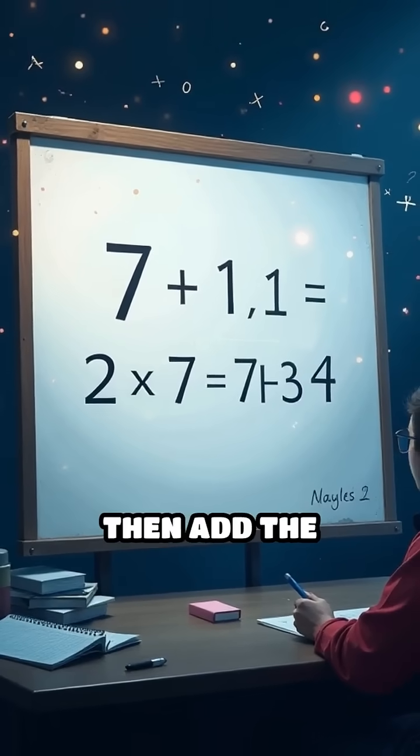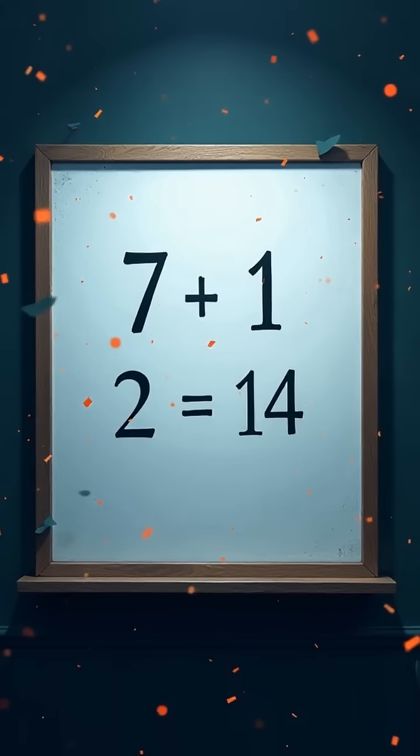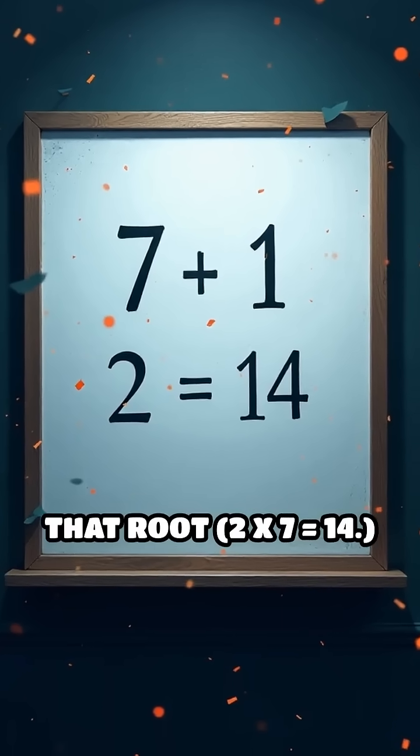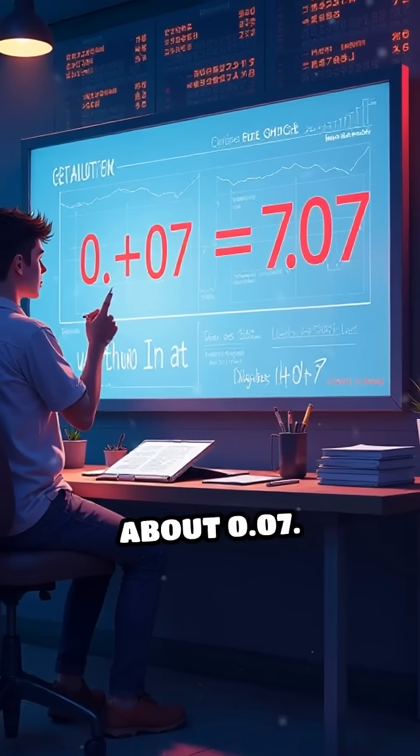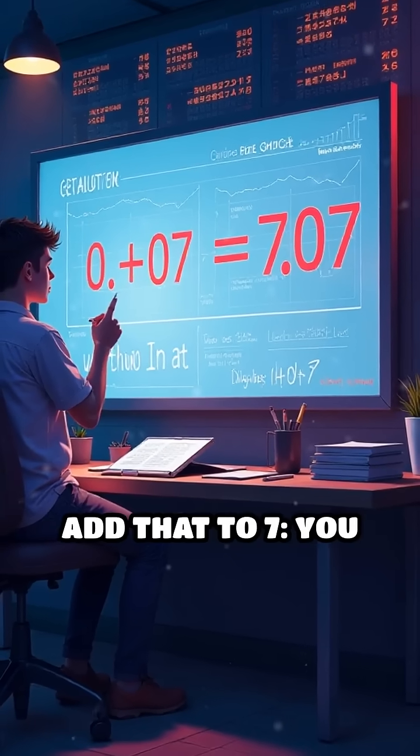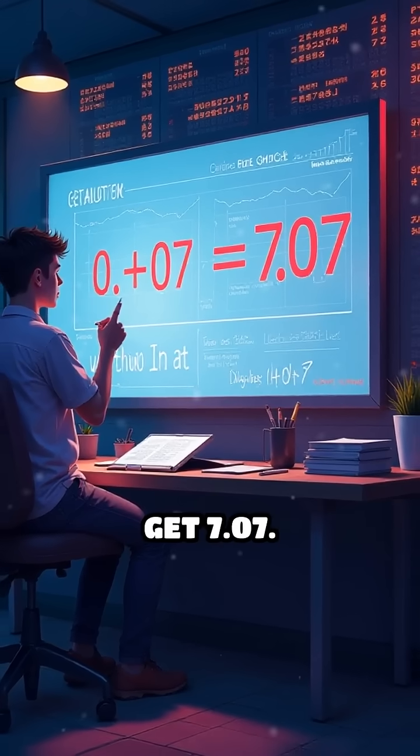Take the lower root, 7, then add the difference from the lower square. 1 divided by twice that root, 2 times 7 equals 14. So, 1 divided by 14 is about 0.07. Add that to 7, you get 7.07.